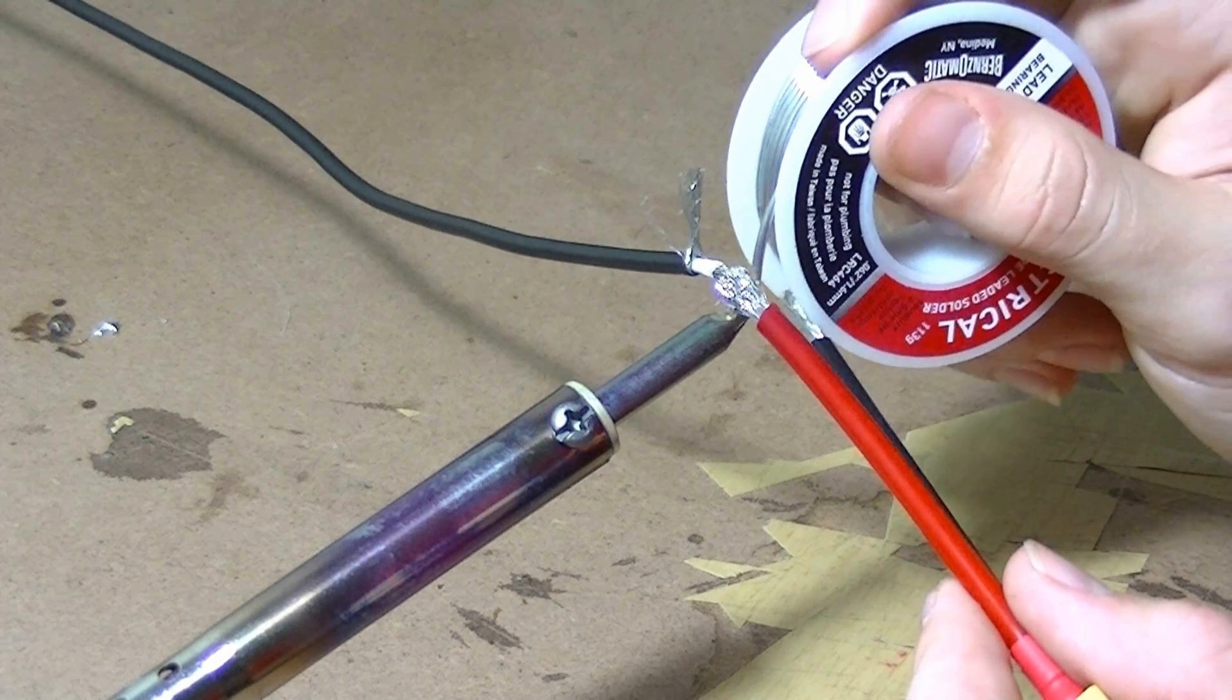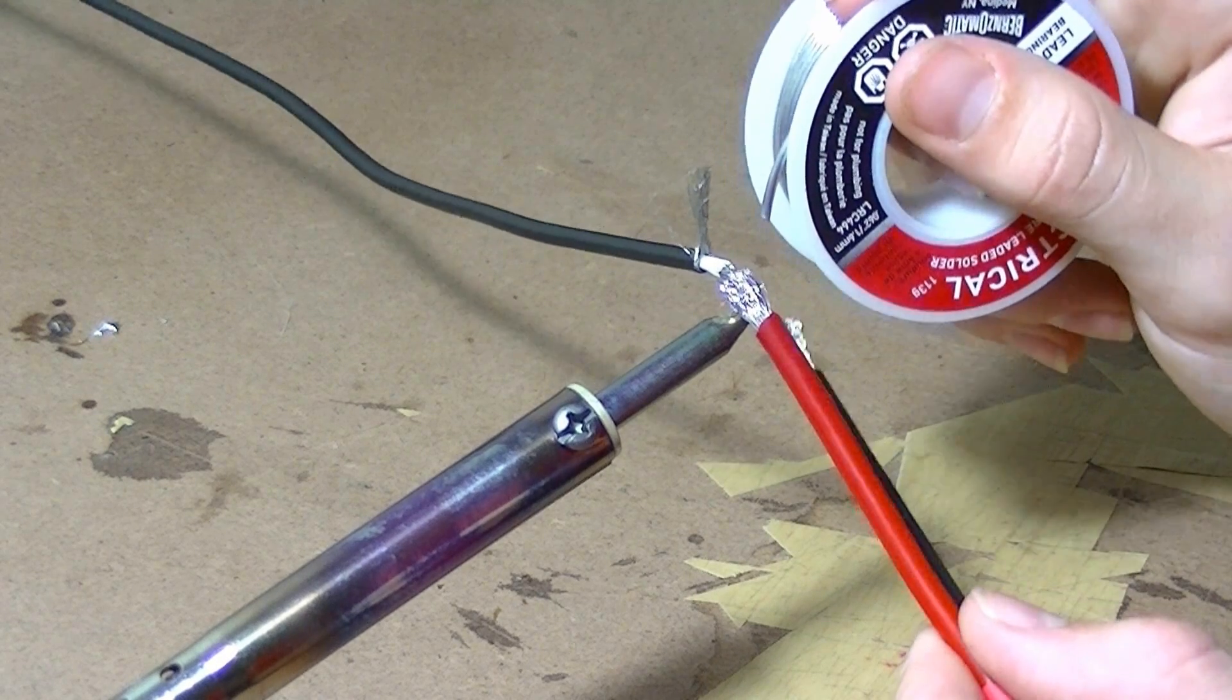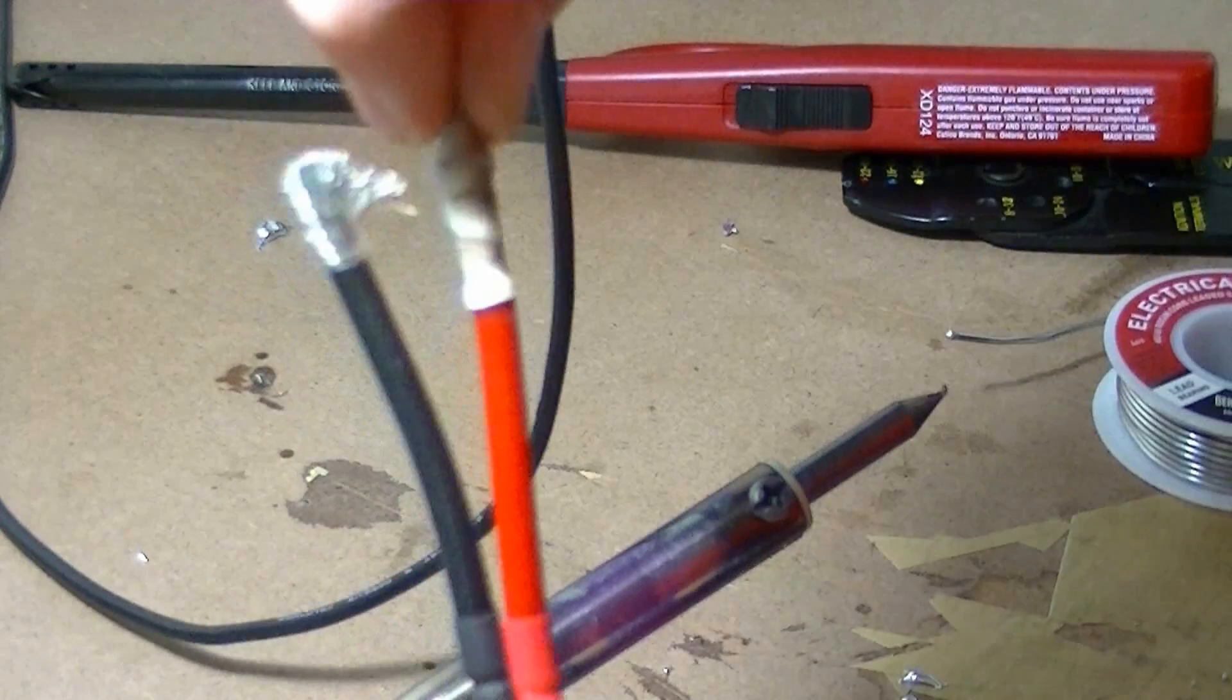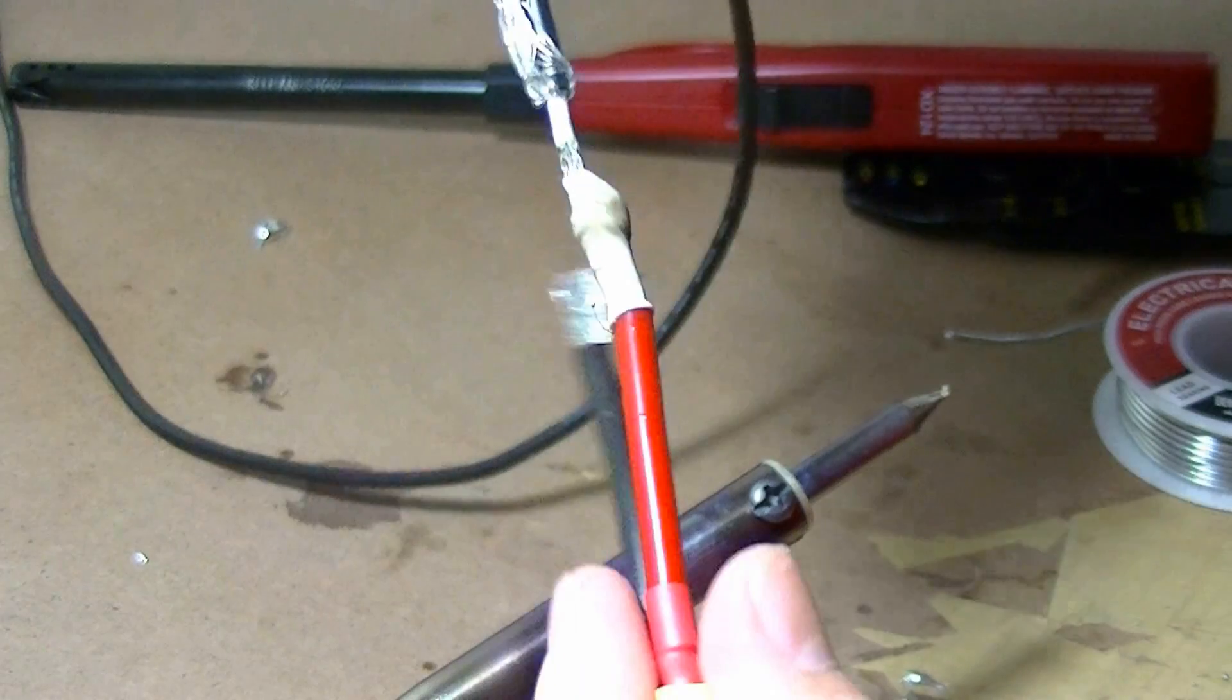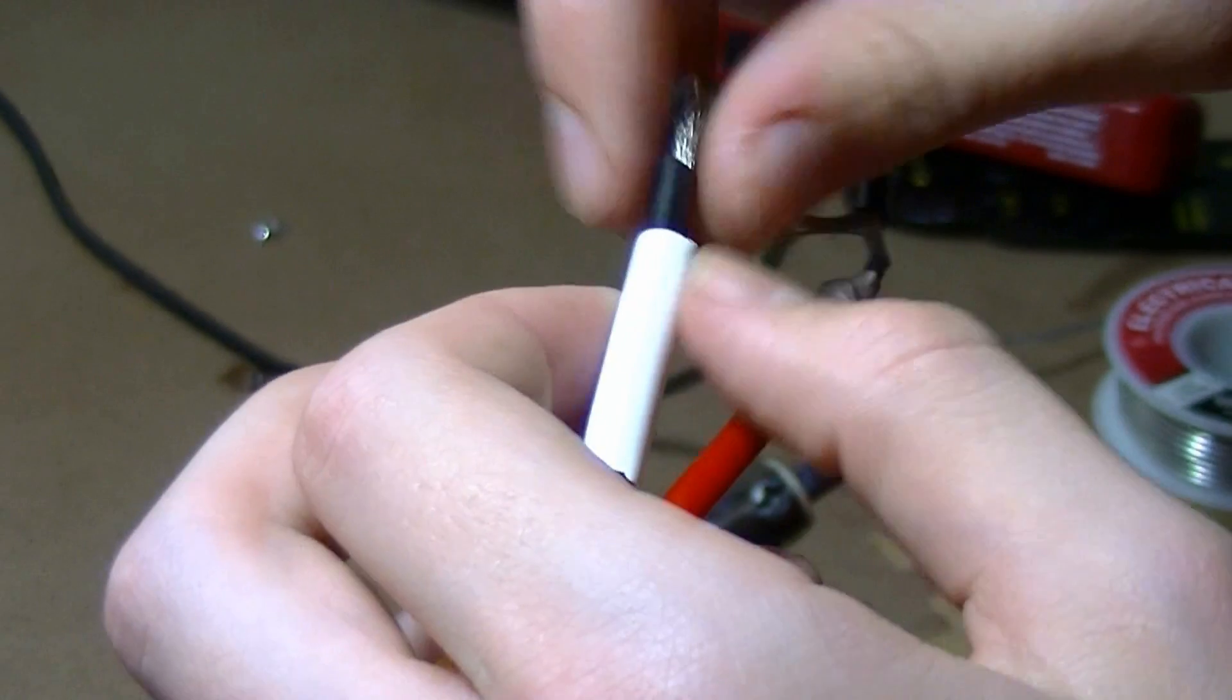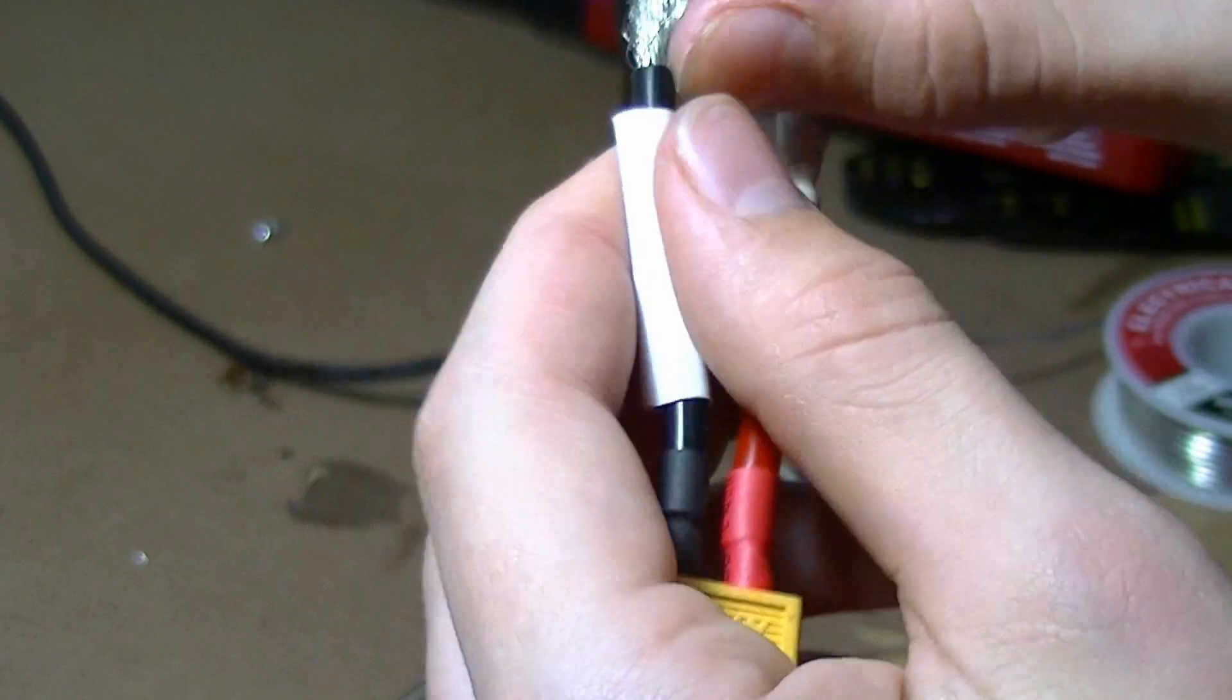After you're done, it should look like this and you can put your heat shrink on. Now do the same thing with the negative. Put your heat shrink on and then fray it out.